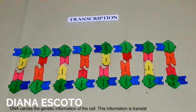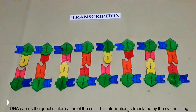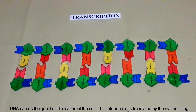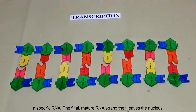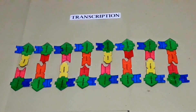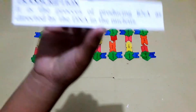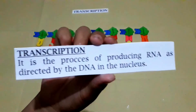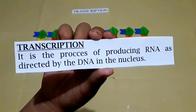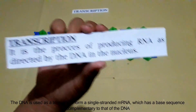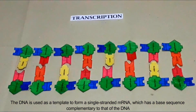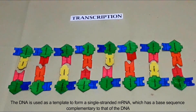Transcription: DNA carries the genetic information of the cell, which is expressed by synthesizing a specific RNA. The final mature RNA strand then leaves the nucleus. Transcription is the process of producing RNA as directed by the DNA. In the nucleus, the DNA is used as a template to form a single-strand mRNA, which has a base sequence complementary to that of the DNA.